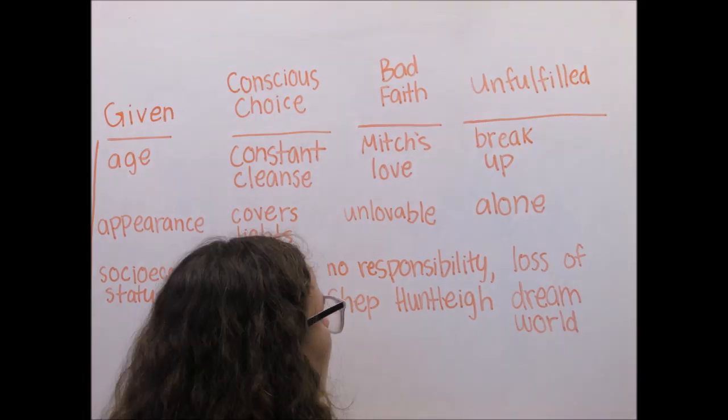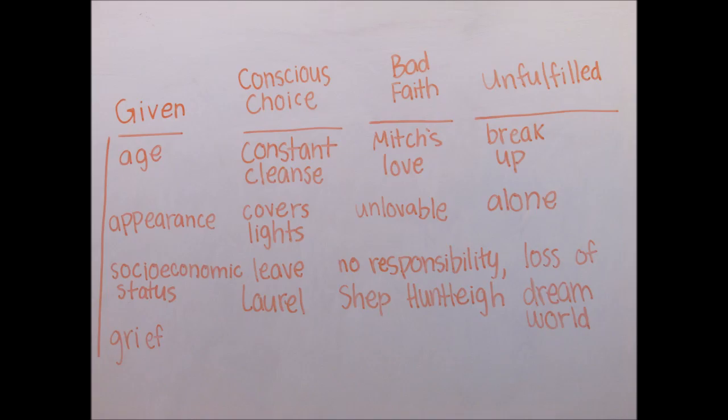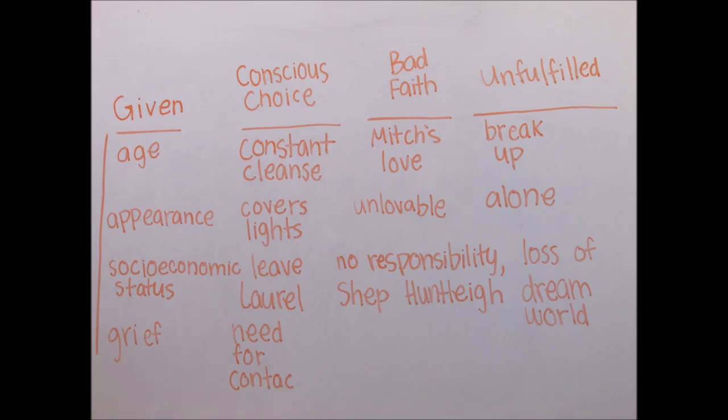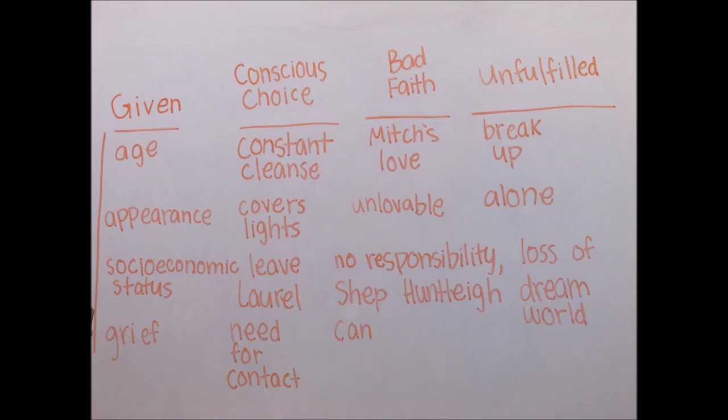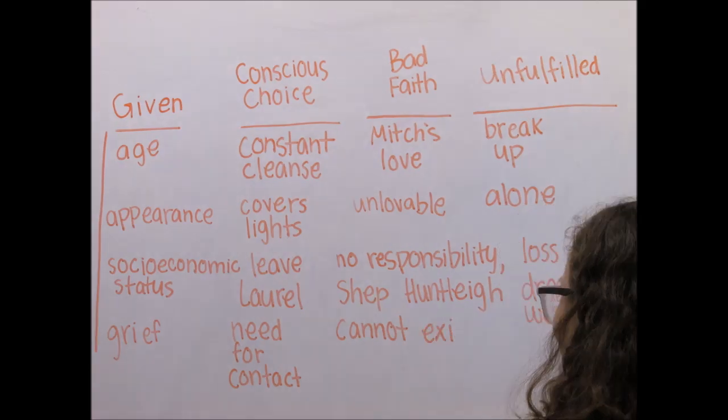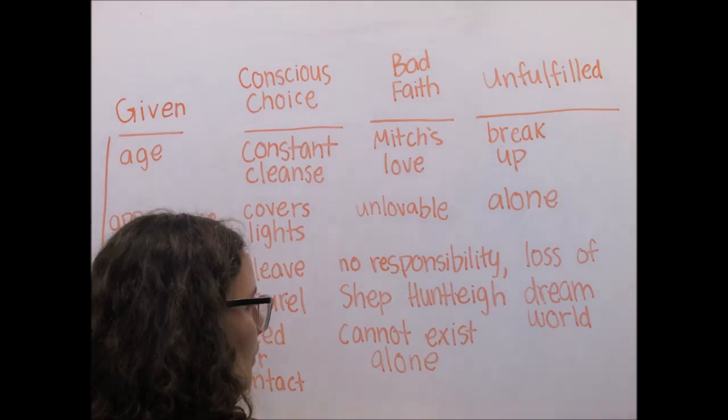After her husband, Alan, commits suicide, Blanche deals with her facticity of her grief by using bad faith to deceive herself into believing that she cannot exist alone, and therefore must engage in the immediate gratification of sexual promiscuity. From the beginning of the play, Blanche states that she must be with somebody, she can't be alone, highlighting her aversion to solitude and also the conscious recognition for human contact. As a result, she engages in affairs with students and townfolk back in Laurel, which emphasizes her dependence on relationships to reconcile her grief.